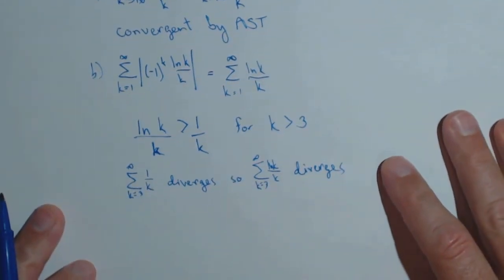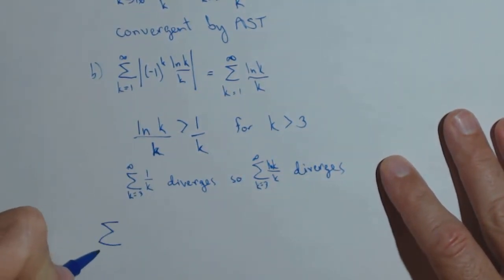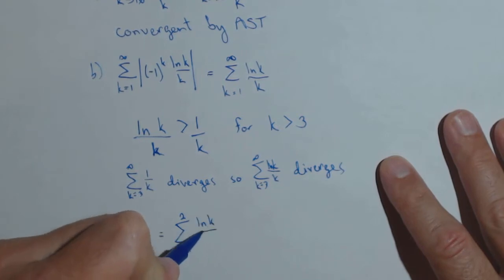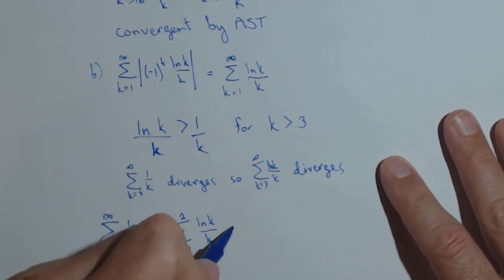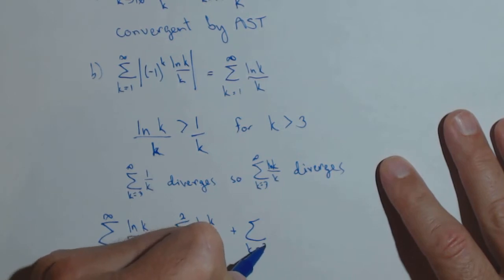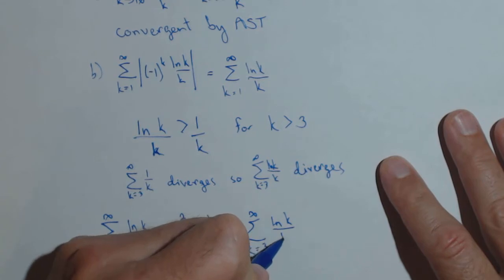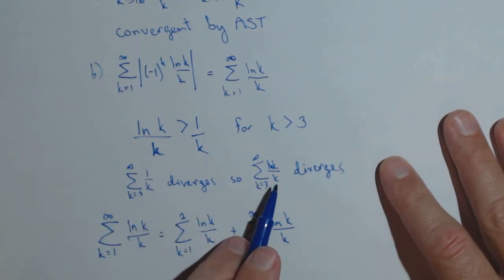Now here's what we're doing. We were trying to test k equals one to infinity of ln of k over k. And what we're doing is we're splitting it into k equals one to two of ln of k over k plus k equals three to infinity of ln of k over k. We know this piece diverges. We just showed that. Well, if this diverges, the sum diverges. That means this guy here diverges.